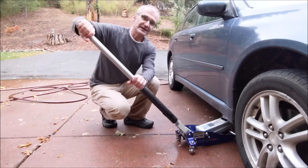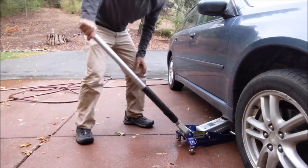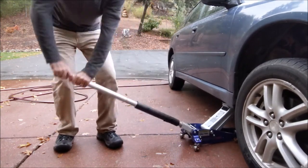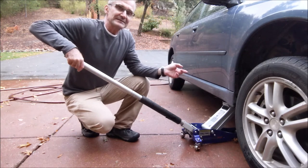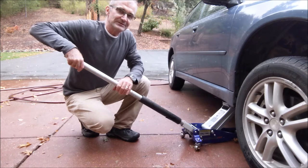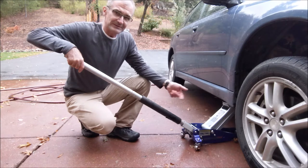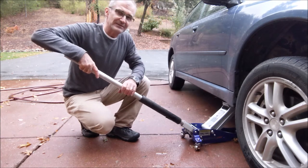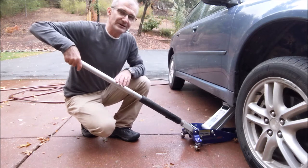How a jack works is you tighten the handle up, it locks the valve at the bottom. Safety things before you jack anything up: block the tires, make sure you're on level ground, don't really do this unless you know what you're doing and make sure you're at the right jack point. Now what I'm going to do is release the hydraulic pressure. I turn the handle, it lets the pressure out of that valve and then with no pressure on it, it dropped back down.